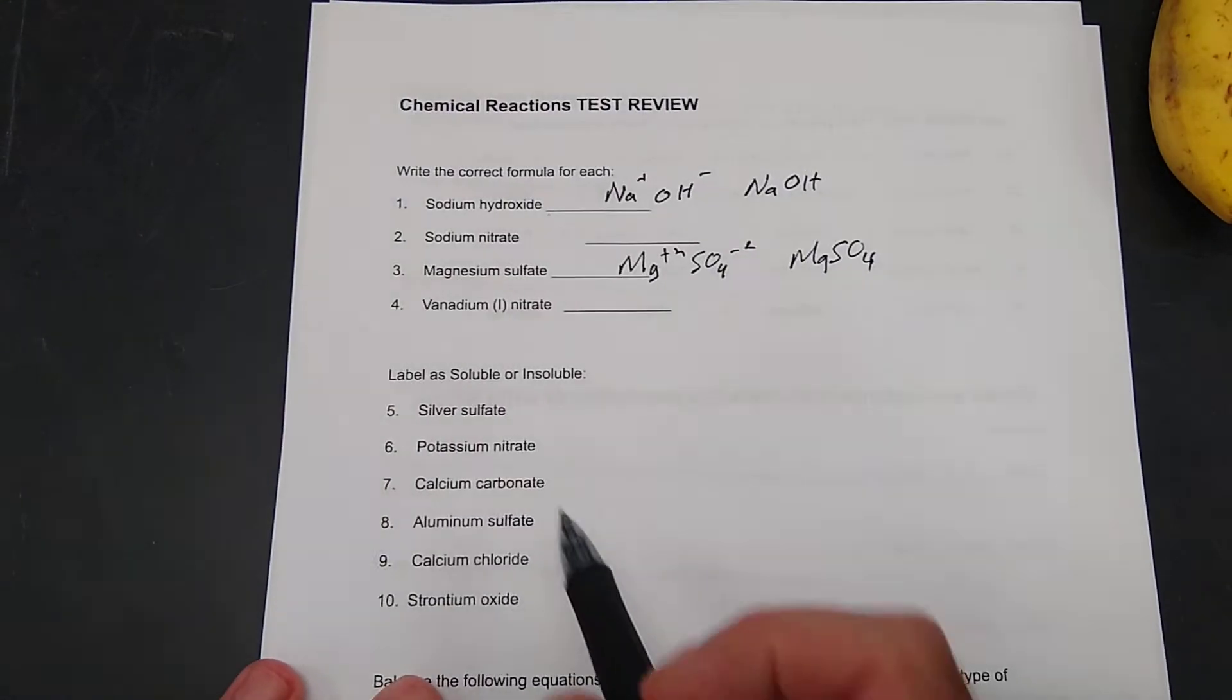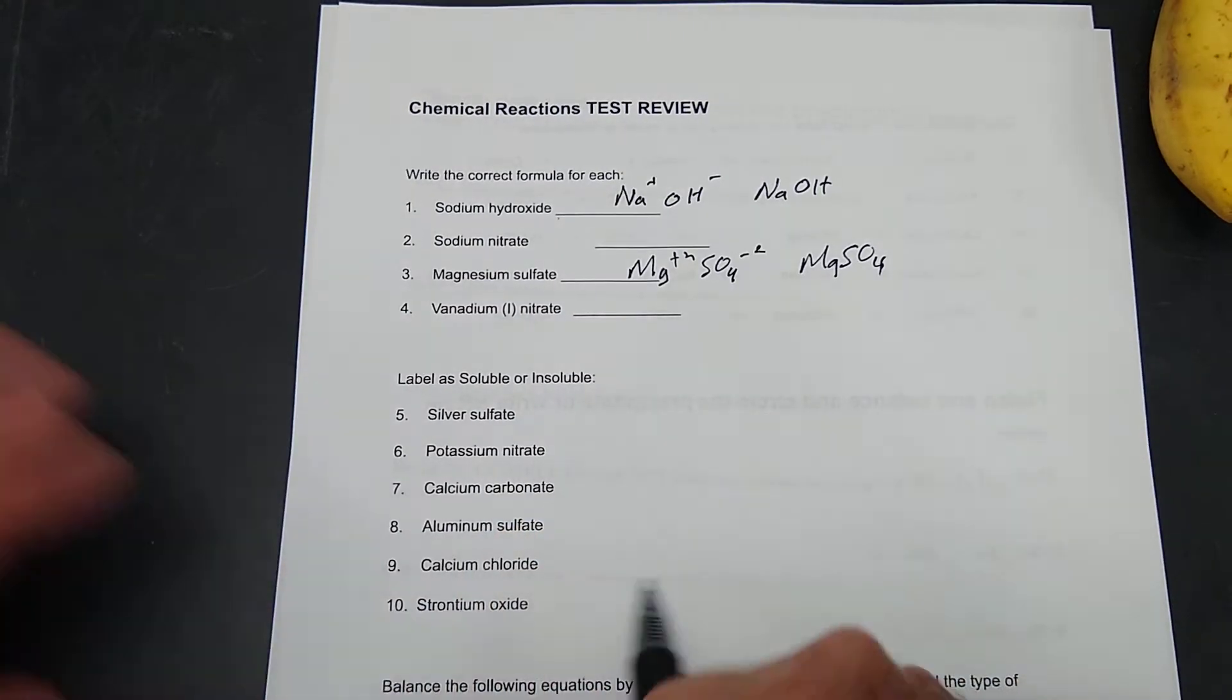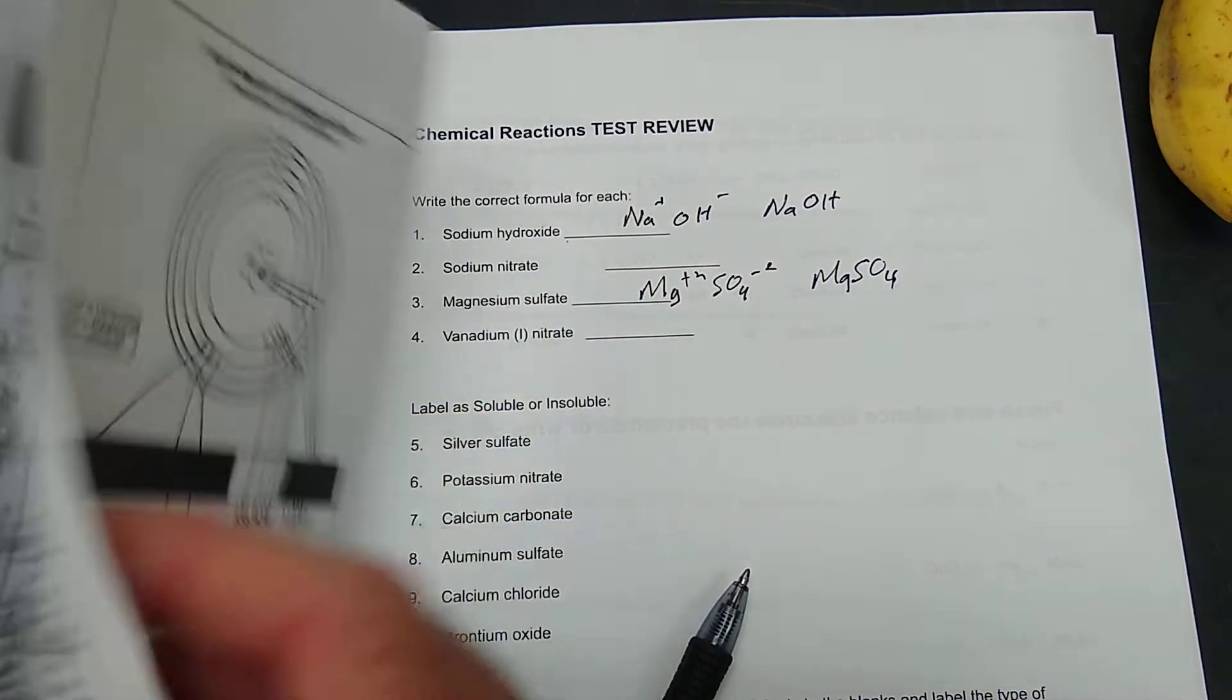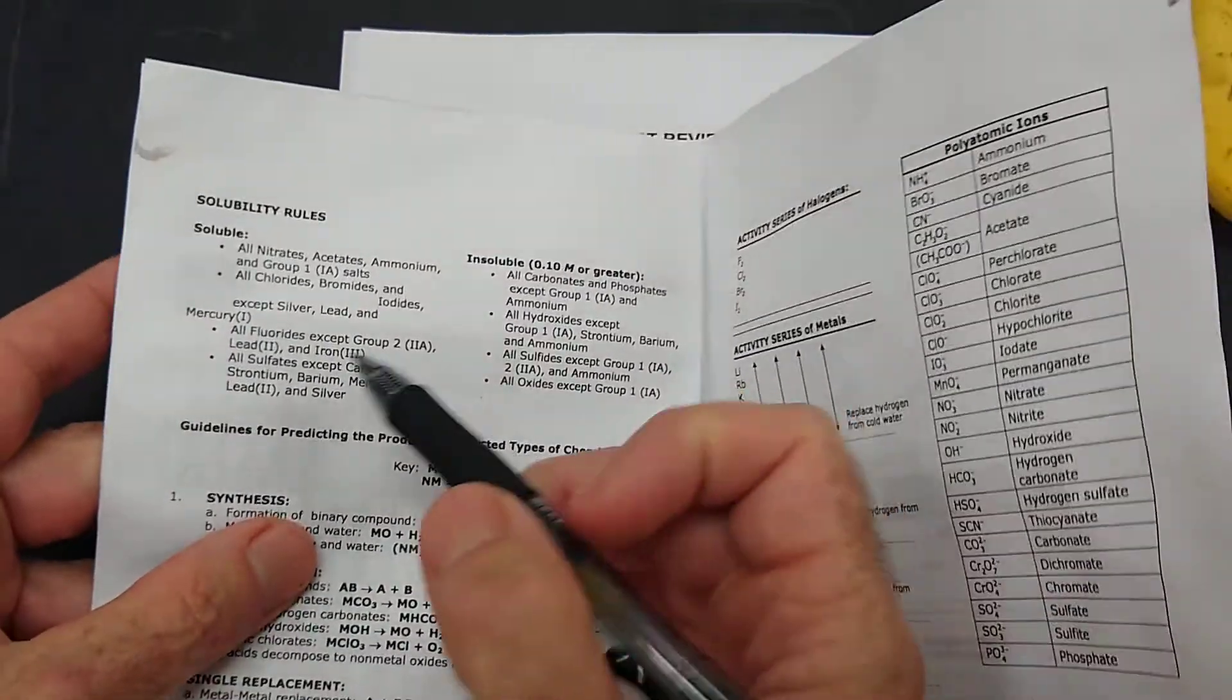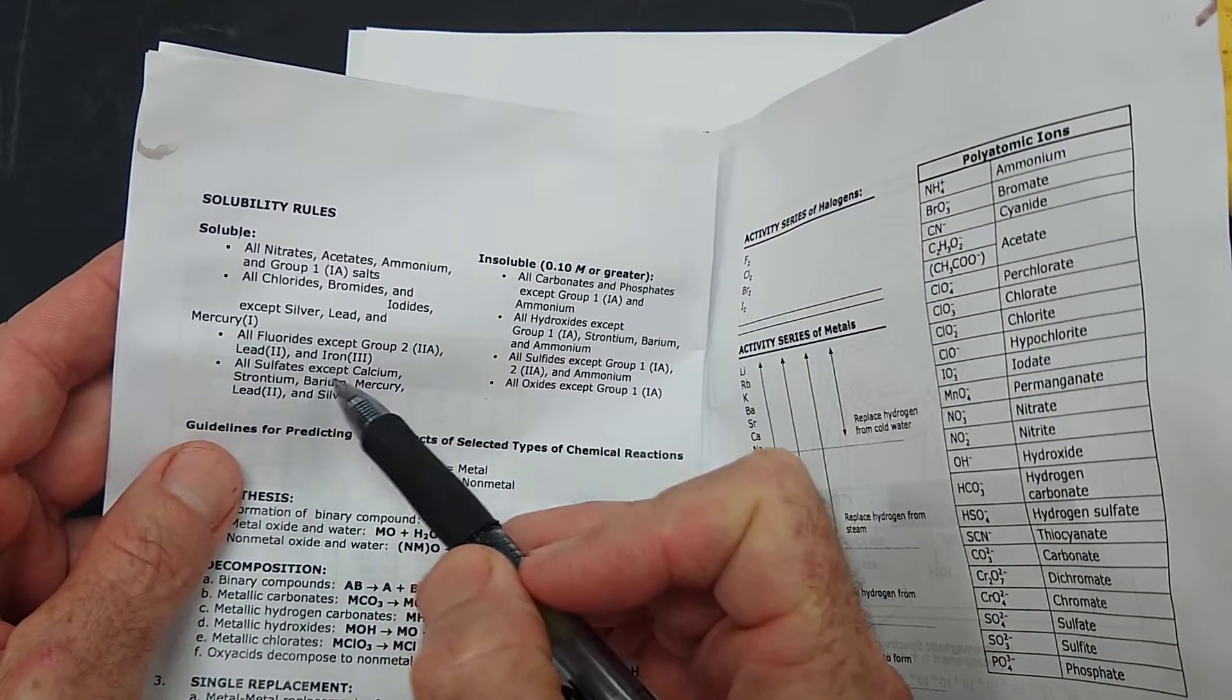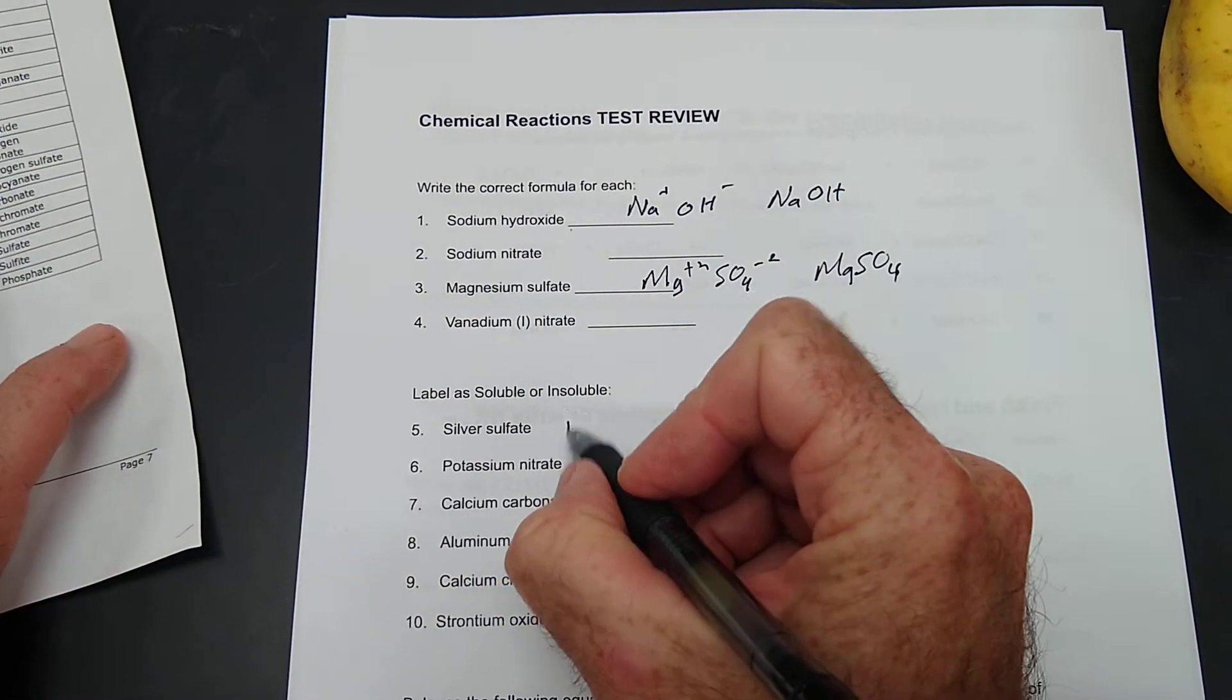Let's try this. Label it soluble or insoluble. Silver sulfate. I'll look up here on page six. All sulfates are soluble except calcium, strontium, barium. Ooh, except silver. So this is insoluble.